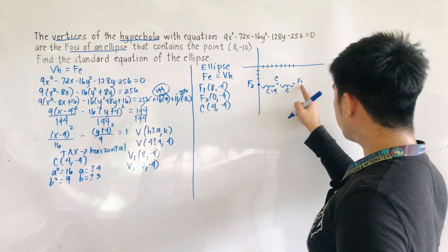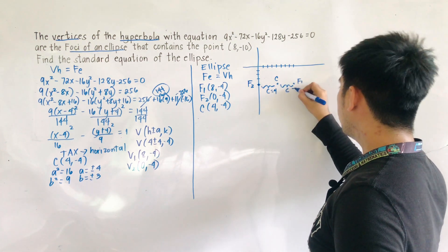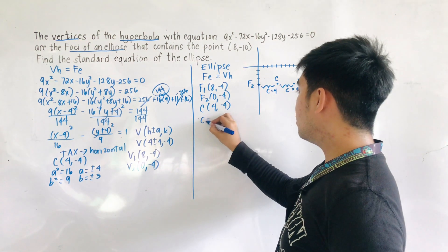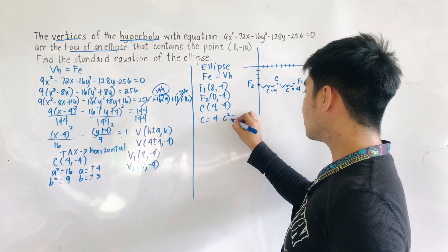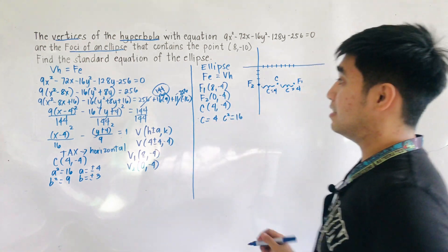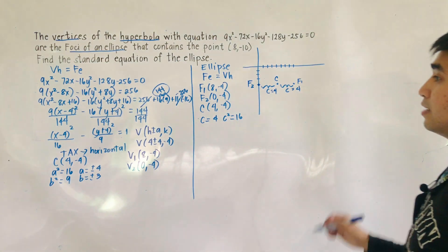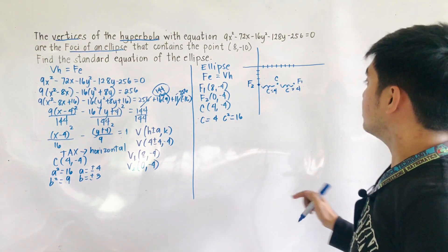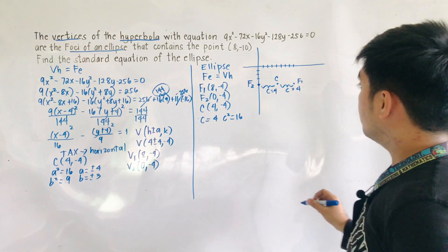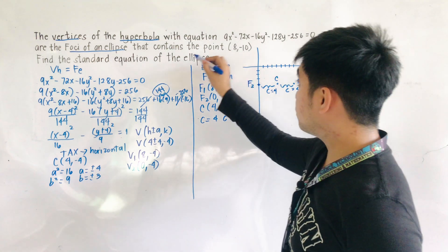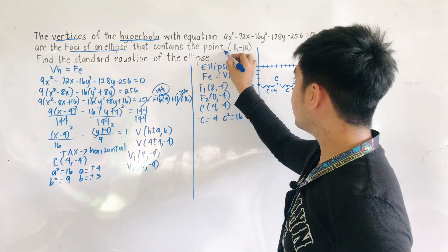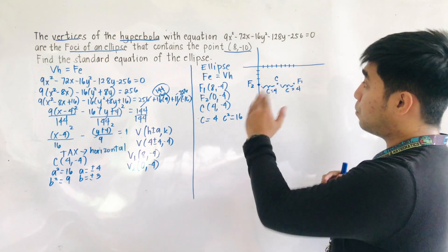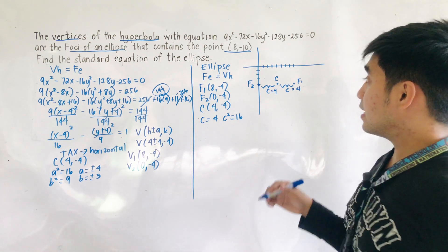We now have the value of c, which is 4. Therefore, c² equals 16. We are also given another point: the ellipse contains the point (8, negative 10).